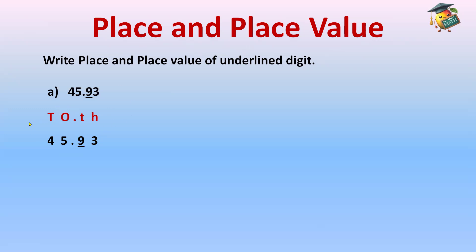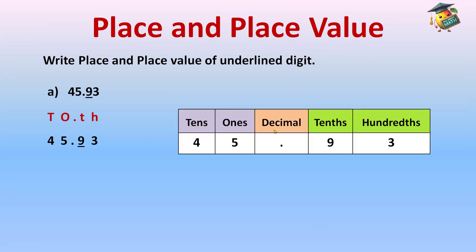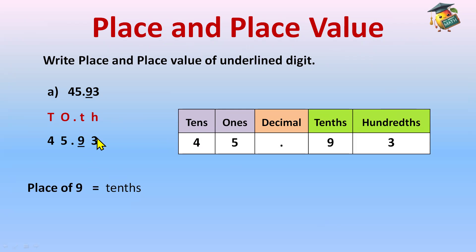So I've written the places above the digits. Before decimal we have ones and tens; after decimal we have tenths and hundredths. You can also make a table: decimal in the middle, then ones and tens before it, tens and hundreds after it. Before decimal we have 5 and 4; after decimal we have 9 and 3. The place of nine is tenths — just the place, no value written yet. Place of three is hundredths, place of five is ones, place of four is tens.